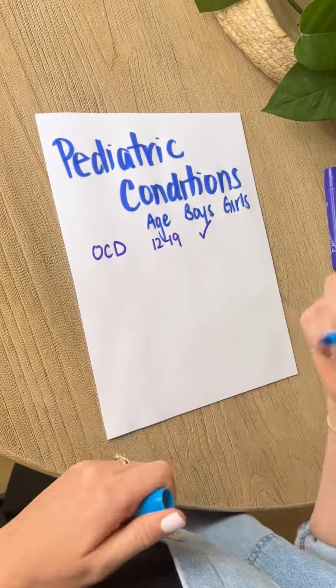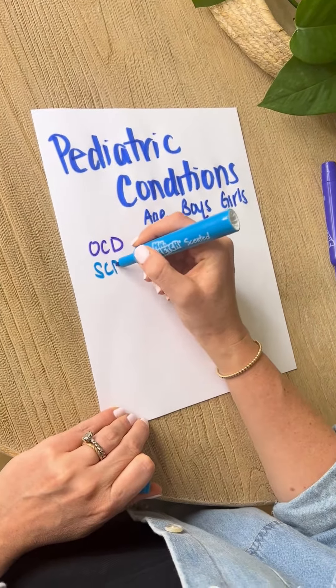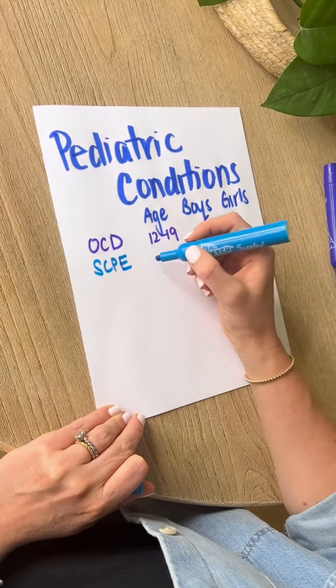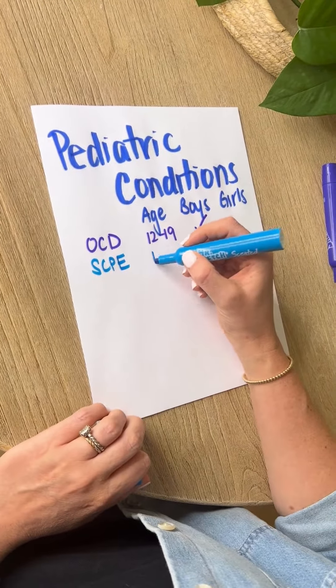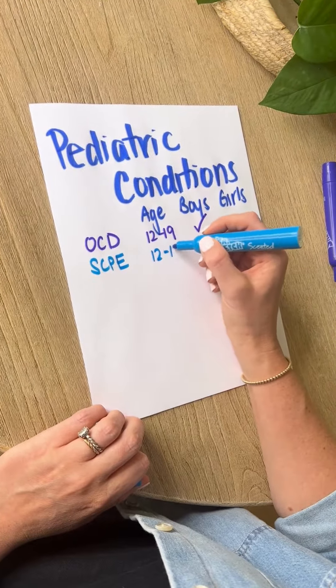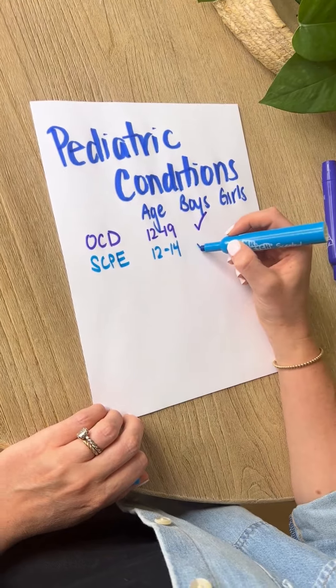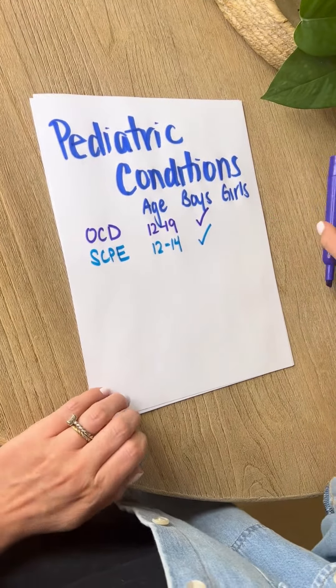Next we have slipped capital femoral epiphysis. The age that it's most common at is between 12 and 14 and it also is more common in boys.